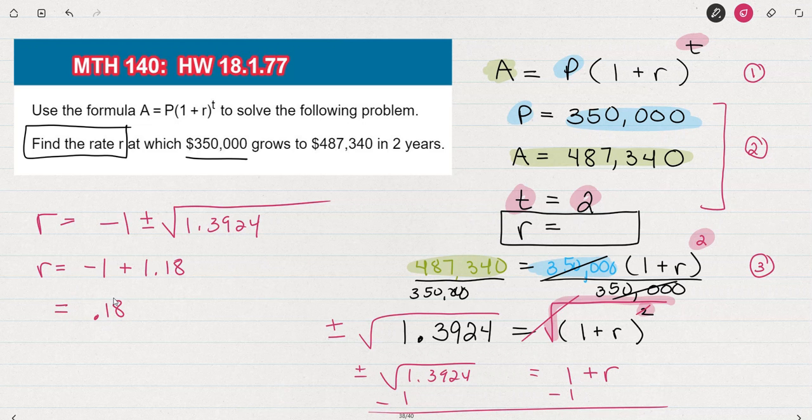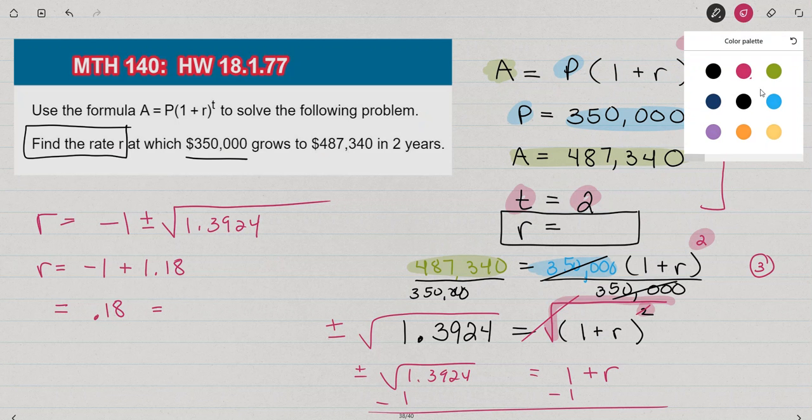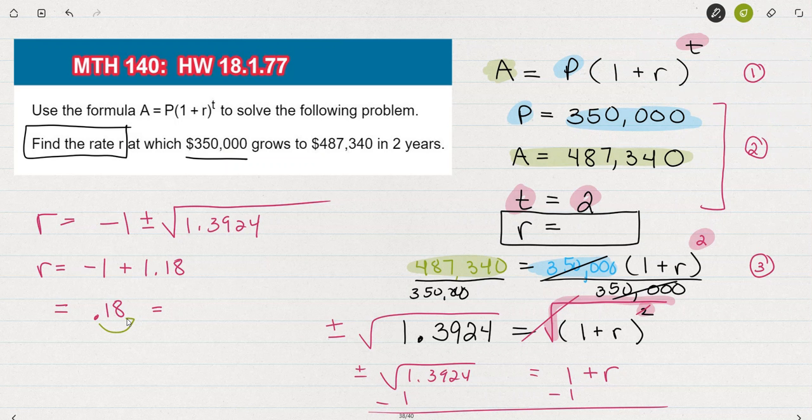And since I'm looking for an interest rate, if I change that to a percent, to do that, I'd multiply it by 100. Or in other words, move the decimal 2 to the right. So that's 18 percent. So it looks like the interest rate is 18 percent.